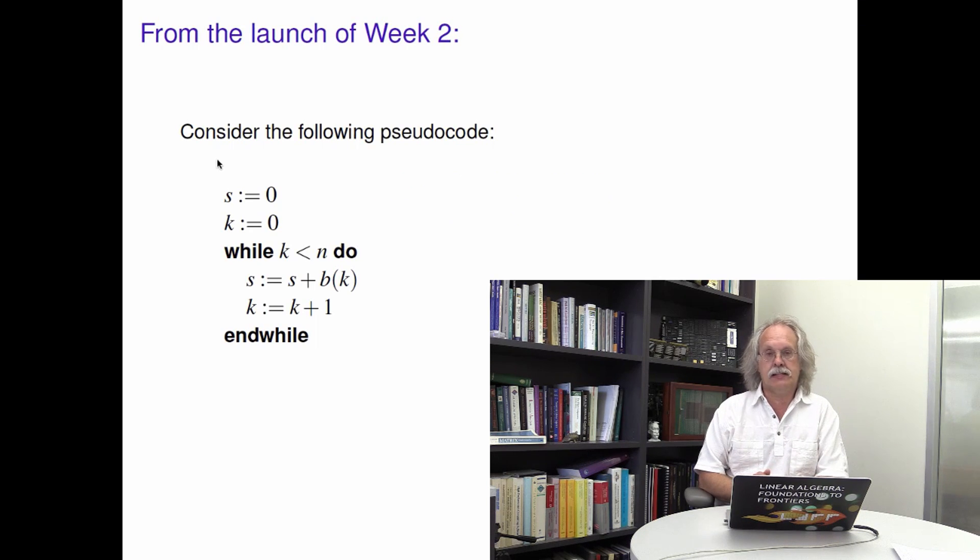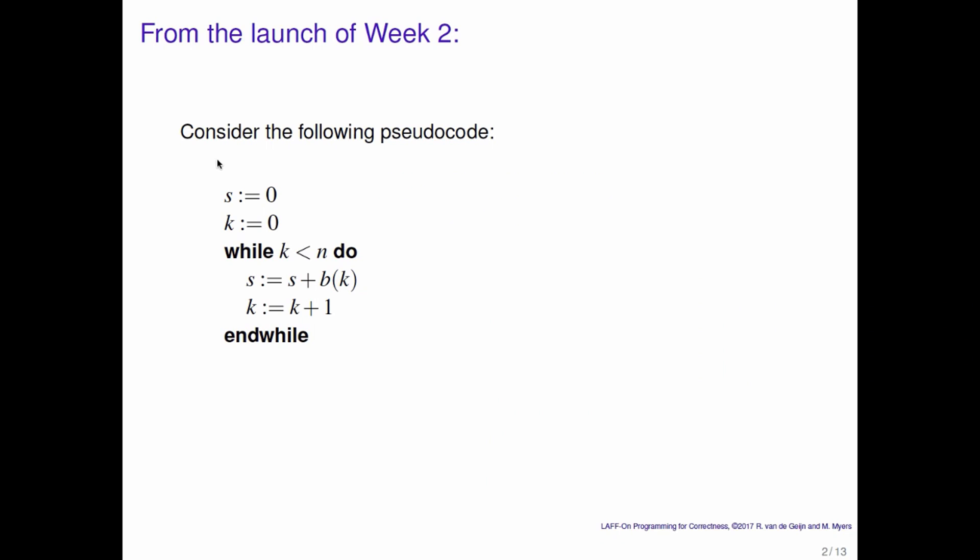So let's go back to that example with which we launched week one and week two. Here's the code. What is it supposed to do? It's supposed to sum the elements in array b where the size of array b is n. And what does it do?